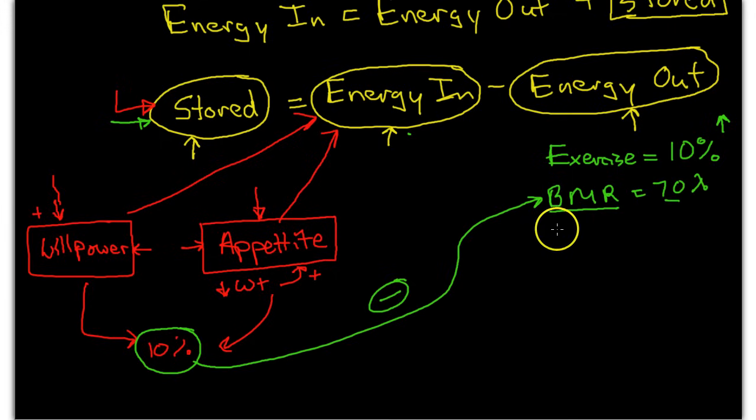So 70 plus 10%, we're only up to 80%. What else is there? There's something called the thermic energy of food. This is basically the amount of energy that we use to digest, absorb, and metabolize the foods that we eat. It's not something that we have conscious control over. In fact, the more food that we eat, the more thermic energy of food we have.